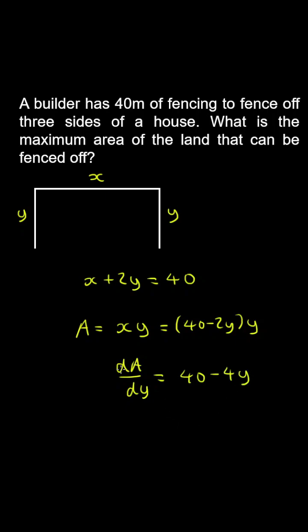And then setting this derivative to zero, we get y is equal to 10 metres. And substituting for y, we can get x is equal to 20 metres, so therefore the maximum area of the land is 20 by 10 or 200 metres squared.